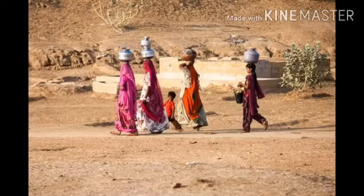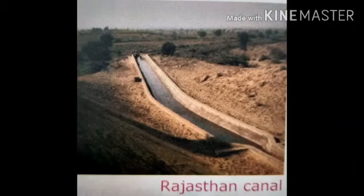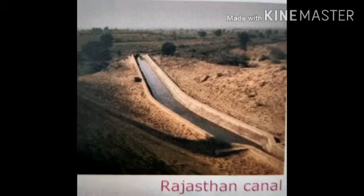Water is a major problem in this region. Canals are an important source of water supply in the Thar Desert. The Indira Gandhi Canal irrigates a vast amount of land in the Thar Desert and is the longest canal of India. The canal begins at the Harike Barrage, where the rivers Sutlej and Beas meet, and continues in a south-west direction for 470 km.